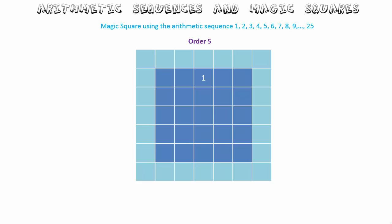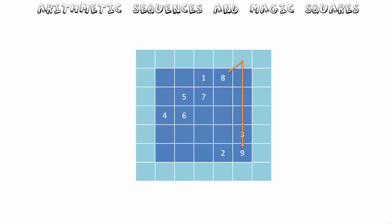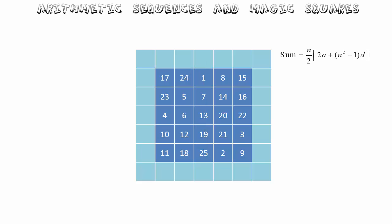Now let's try the next odd order: a five by five magic square. We follow the same rules — start with one in the middle of the first row, then move northeast. Note where two, three, and subsequent numbers are placed, being careful when a position is already occupied. At number sixteen, it goes directly under fifteen. The last number, twenty-five, is always directly opposite the first number, one. With n equals five, a equals one and d equals one, the magic sum is 65.